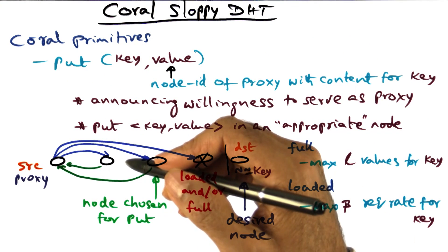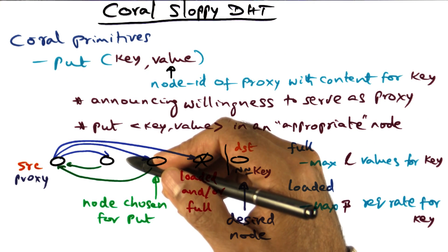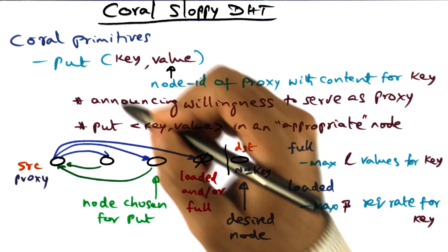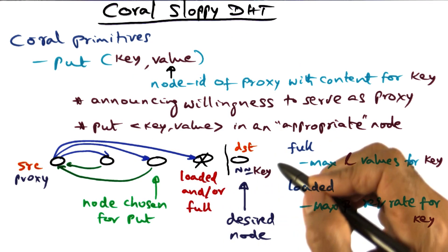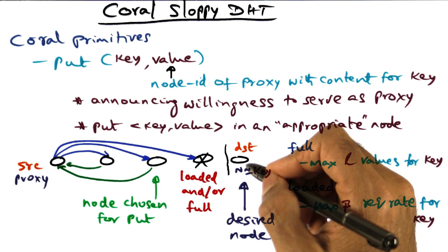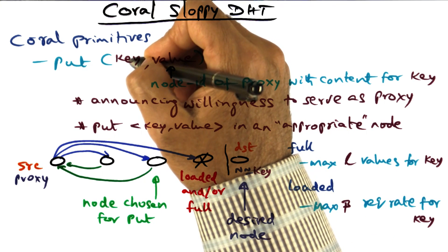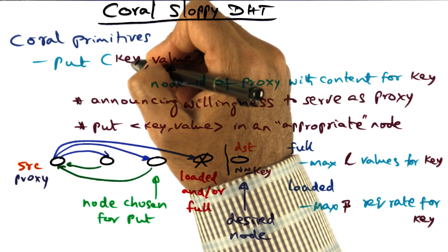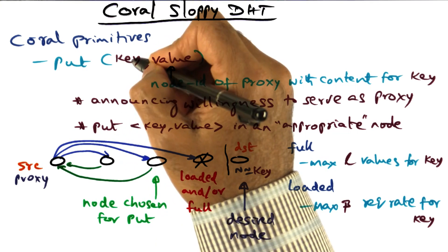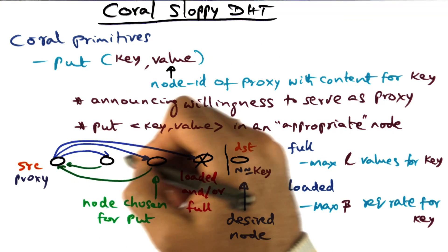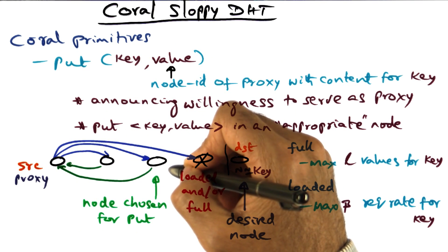So the get operation is going to work exactly similarly. That is, given a key that I'm looking for, I'm not going to go directly to the destination that might be hosting it, as would happen in the greedy approach. But instead, what I would do is go to a node that is half the distance to the key that I'm looking for.